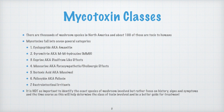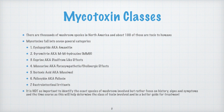Sixth, psilocybin — very common in so-called magic mushrooms. Psilocybin is a prodrug metabolized into its active form psilocin, where a phosphate group is cleaved off. Seventh, gastrointestinal irritants — a variety of mycotoxins that tend to just cause gastrointestinal irritation. To emphasize: it is not as important to identify the exact species of mushroom involved, but rather to focus on history, signs and symptoms, and time course, as this will help determine the class of toxin involved and be our best guide for treatment.